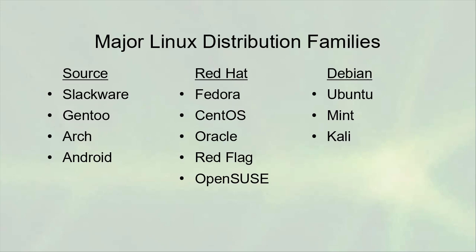The Red Hat family includes Fedora, which is kind of their development suite. You have CentOS, which is a version of Red Hat with a lot of the proprietary stuff and branding removed. There is Oracle, which is basically the same thing as CentOS except it's paid for by Oracle. There's also Red Flag, which is the Linux distribution put out by China, and things like OpenSUSE. These are all in the Red Hat family and they all share the same Red Hat package management system.